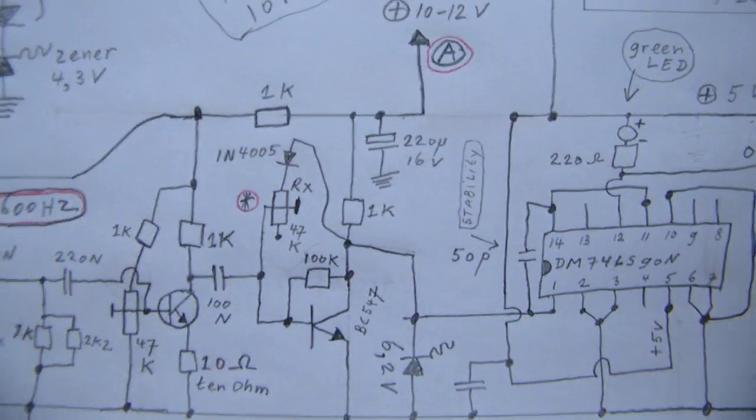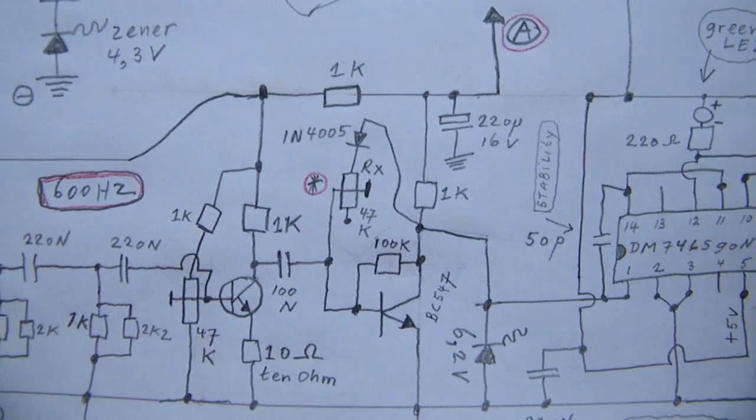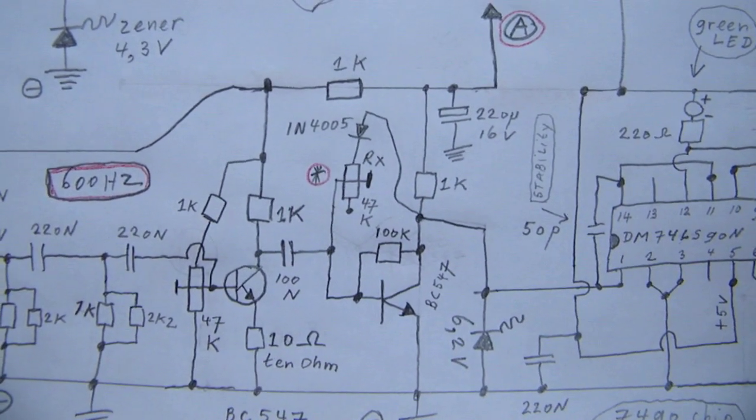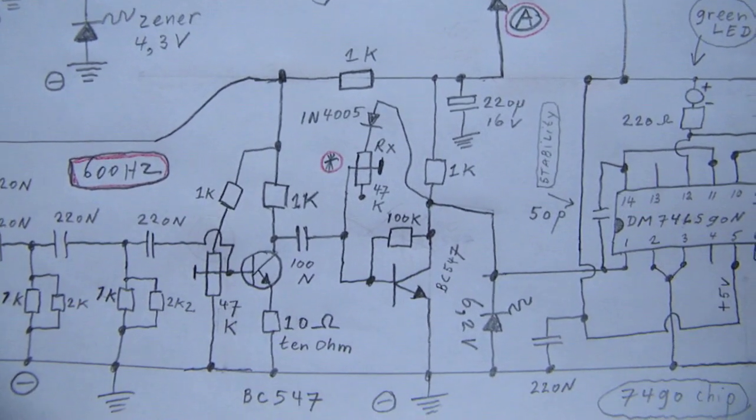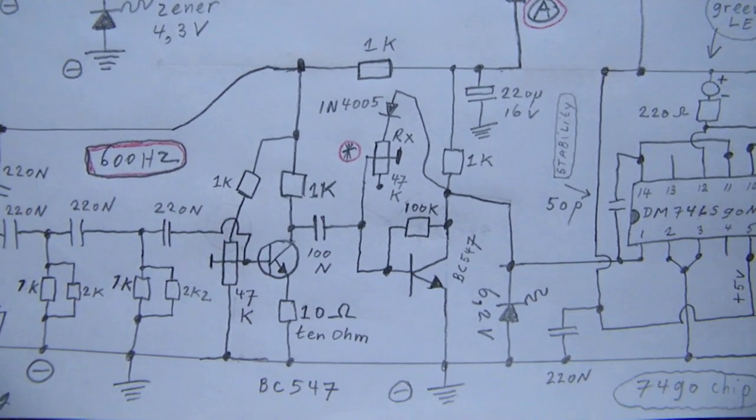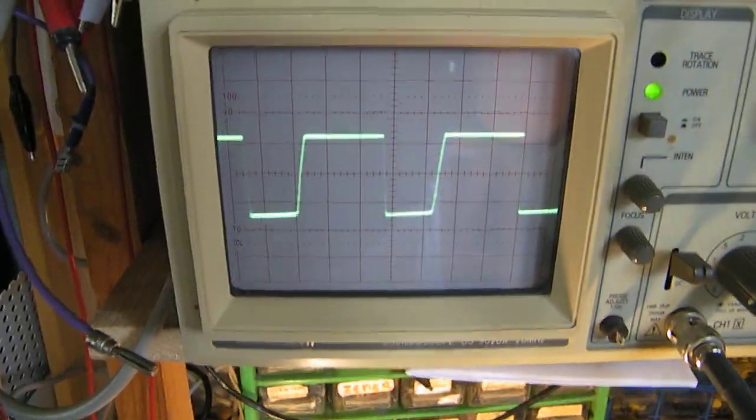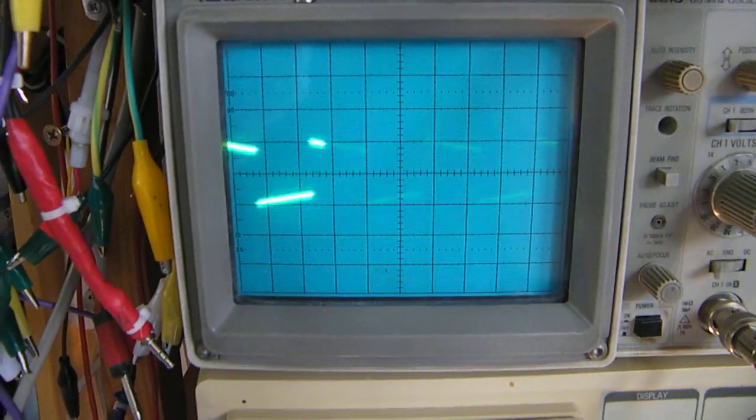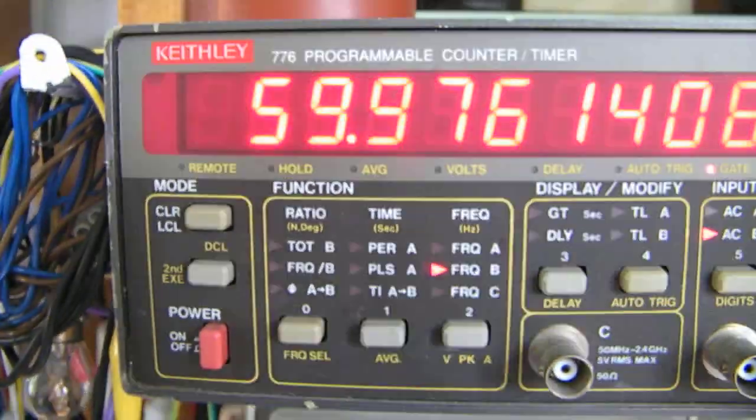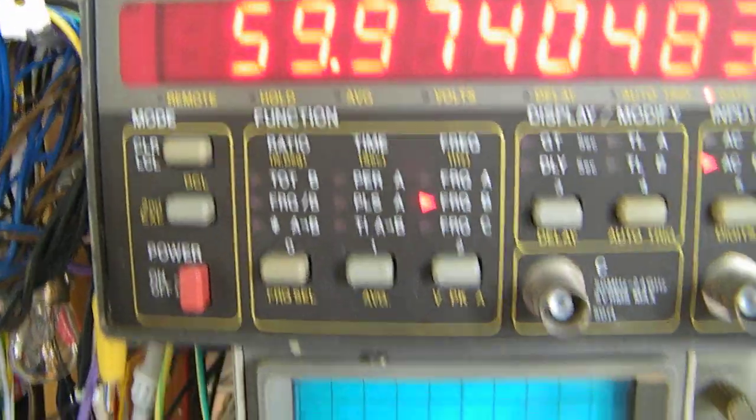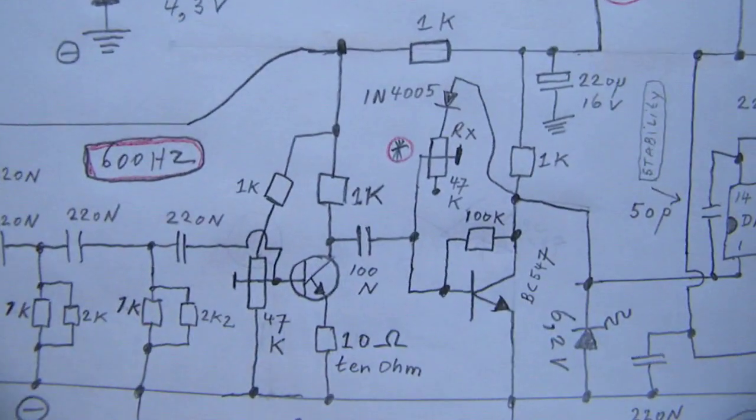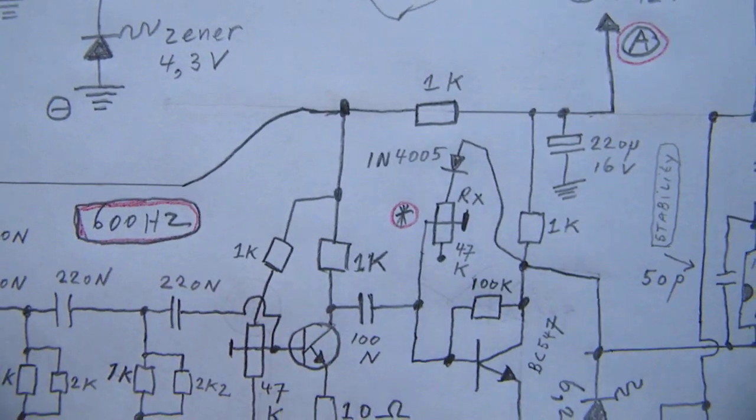The function from that diode and that potentiometer is to set the time relation in the frequency from the square wave a little bit. I found out that I had 600 Hz here, and here approximately 60 Hz, and it's only meant to fine tune the waveform.